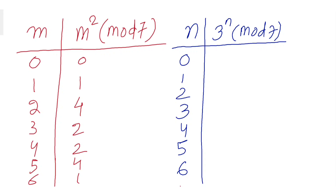3 to the power 0 is 1, so 1 mod 7 is 1. 3 to the power 1 is 3, mod 7 is 3. 3 squared is 9, mod 7 is 2. 3 cubed is 27, mod 7 is 6. 3 to the power 4 is 81, mod 7 is 4. 3 to the power 5 mod 7 is 5. 3 to the power 6 mod 7 is 1.